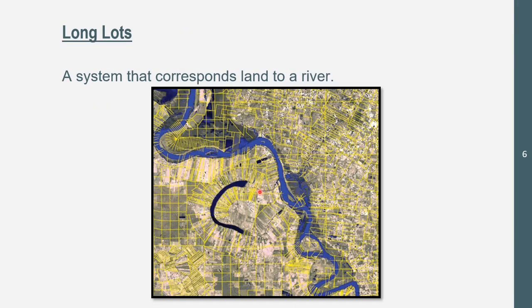And then we've got long lots, which is basically a system that corresponds land to a river. We see different little boxes of areas on this map — it's not township and range, because we see some lines that don't correspond to latitude and longitude. They correspond to a river. So they could say: go down south to the river, go to the beginning of the river, or go to this bridge at the river. You're basically basing everything at a river, so settlement may be along this river. We'll primarily see these in rural areas — probably more in less developed countries or small towns in developed countries.